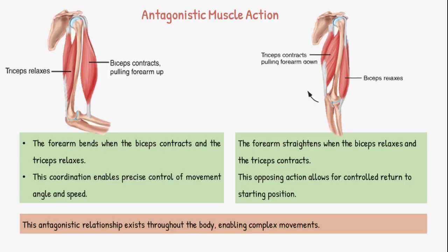When the biceps contracts, the forearm bends. When it relaxes and the triceps contracts, the arm extends. This antagonistic pairing ensures control over speed and range of motion. The same principle applies all over the body, from fingers to toes.